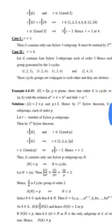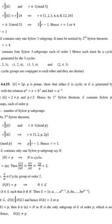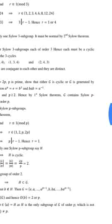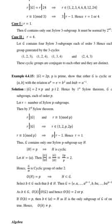Solution. The order of G is equal to 2P and P does not divide 2. Hence, by the third Sylow theorem, G contains Sylow P-subgroups, each of order P.